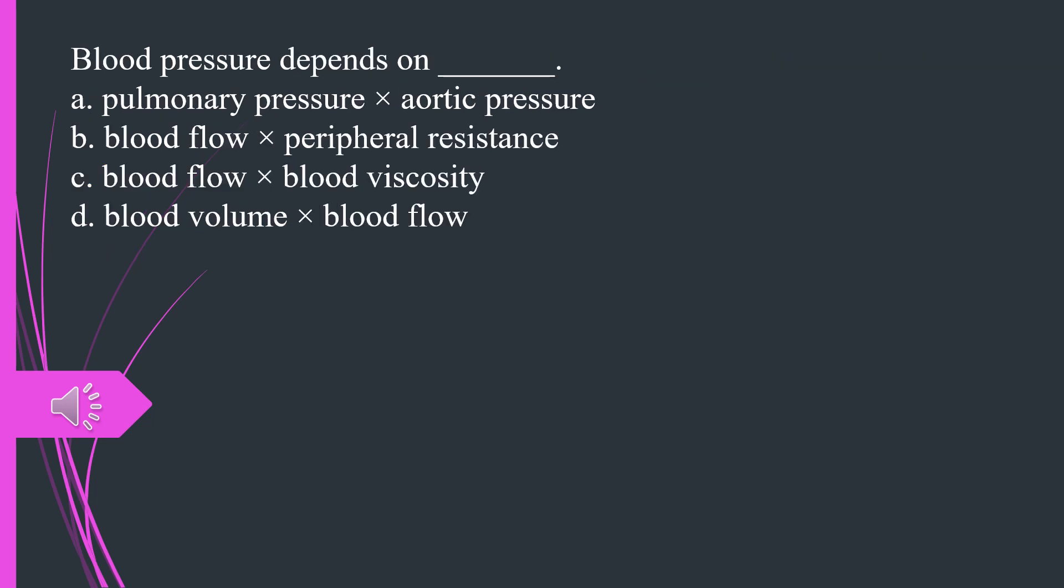Blood pressure depends on A. Pulmonary pressure times aortic pressure B. Blood flow times peripheral resistance C. Blood flow times blood viscosity D. Blood volume times blood flow. The answer is B, blood flow times peripheral resistance.